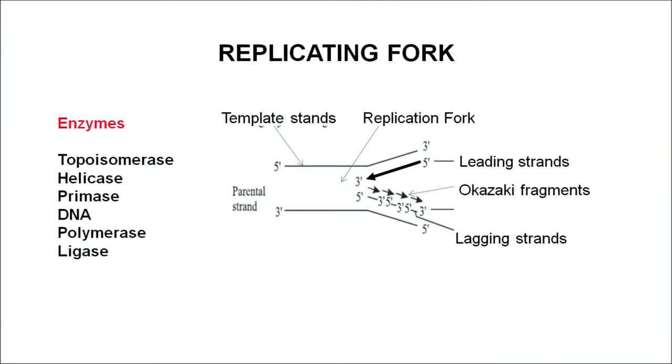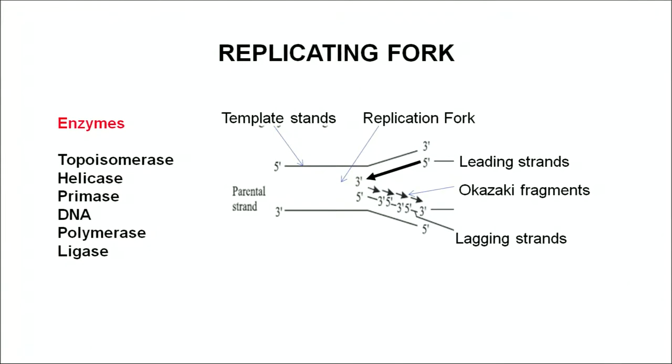The DNA polymerase enzyme cannot start replication on its own. It needs a primer - 5 to 10 base pairs of RNA - which is synthesized by the enzyme primase. The primase synthesizes the RNA and the DNA polymerase keeps on adding nucleosides present in the cell to that chain, ultimately synthesizing the new strand of DNA. The new strand is always synthesized from 5 prime to 3 prime direction, as the new nucleotide is always added at the third position of the sugar molecule.